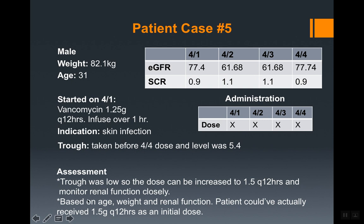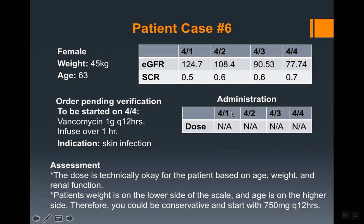Based on the age, weight, and renal function, this patient could have even received 1.5 grams every 12 hours as the initial dose. Patient case six is a female, 45 kg, 63 years old. Vancomycin 1 gram every 12 hours was started for a skin infection. Given the patient's lower weight and older age, you could have been more conservative and started at 750 mg every 12 hours, then check the trough and adjust from there.